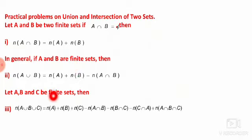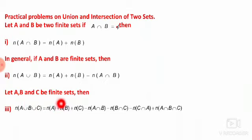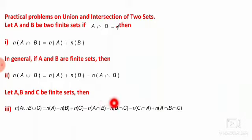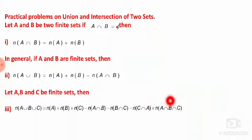If A, B, and C are three finite sets, then N of A union B union C is always equal to N of A plus N of B plus N of C minus N of A intersection B minus N of B intersection C minus N of C intersection A plus N of A intersection B intersection C.